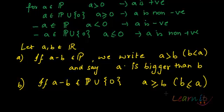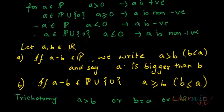So trichotomy would imply, that's just an extension to this, that one of these three should hold. What should hold between a and b? Either a can be greater than b, or a can be equal to b, or a can be less than b. One of these have to hold. Thank you very much.